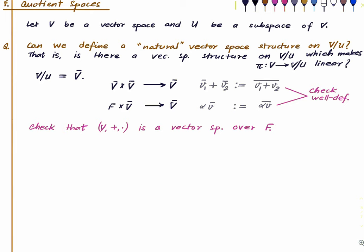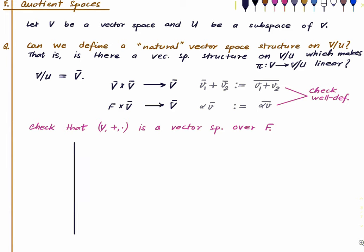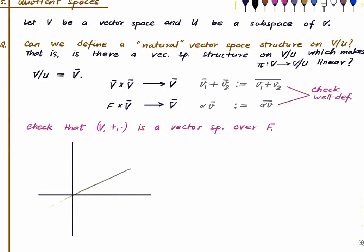I want to talk about a pictorial way of understanding this. Suppose we have a subspace U of R², we will use R² to foster our understanding. This is a subspace capital U, and the cosets are all the lines parallel to U.